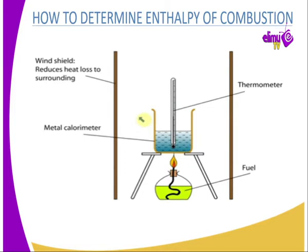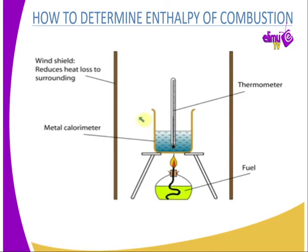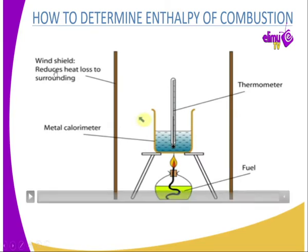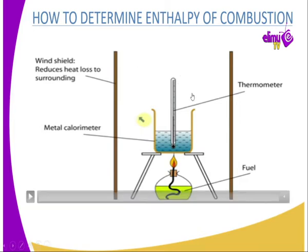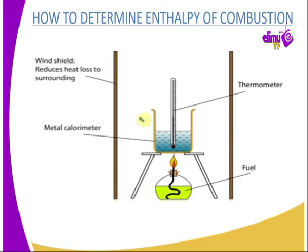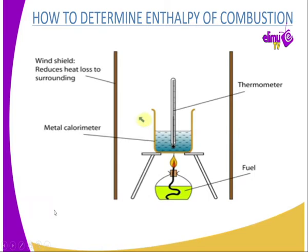Let's look at this illustration to understand how we determine enthalpy of combustion. In the setup we have a wind shield which reduces heat loss to the surroundings, a metal calorimeter which is the apparatus we use to determine the heat gained, and below that we have fuel contained in a burner/lantern. The heat produced will be used to heat water.